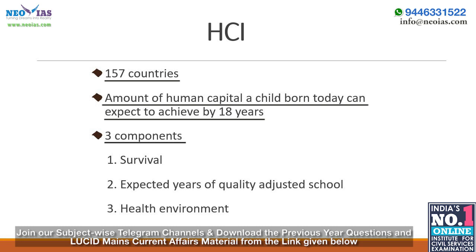The HCI has three components. The first is survival, measured by under-five mortality rates. The second is expected years of quality-adjusted schooling — not just schooling but quality-adjusted schooling — combining information on quantity and quality of education. Quality is measured by harmonizing test scores from major international student achievement testing programs like PISA (Program for International Student Assessment), and quantity is measured by the number of years of school a child can expect to obtain by age 18. The third component is health environment, measured using two proxies: adult survival rates and the rate of stunting for children under age five.